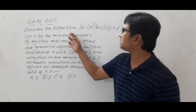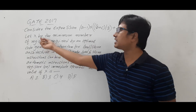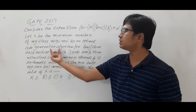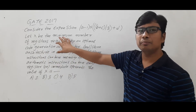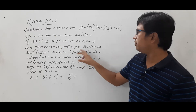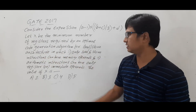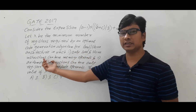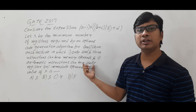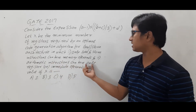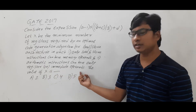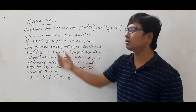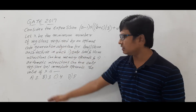Consider the expression they have given. Let X be the minimum number of registers required by an optimal code generation algorithm for a load and store architecture, in which: only load and store instructions can have memory operands, and arithmetic instructions can have only register or immediate operands. They are asking the value of X.